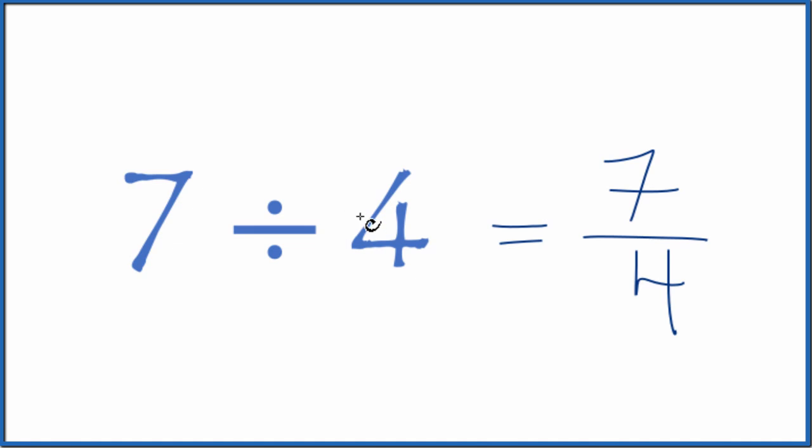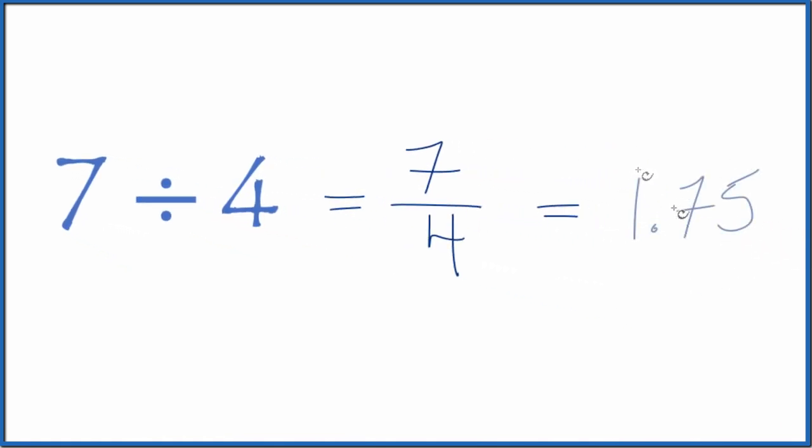Next, you could divide 7 by 4 on your calculator. 7 divided by 4, that equals 1.75. So 7 divided by 4, the fraction 7 fourths, or the decimal here, 1.75.